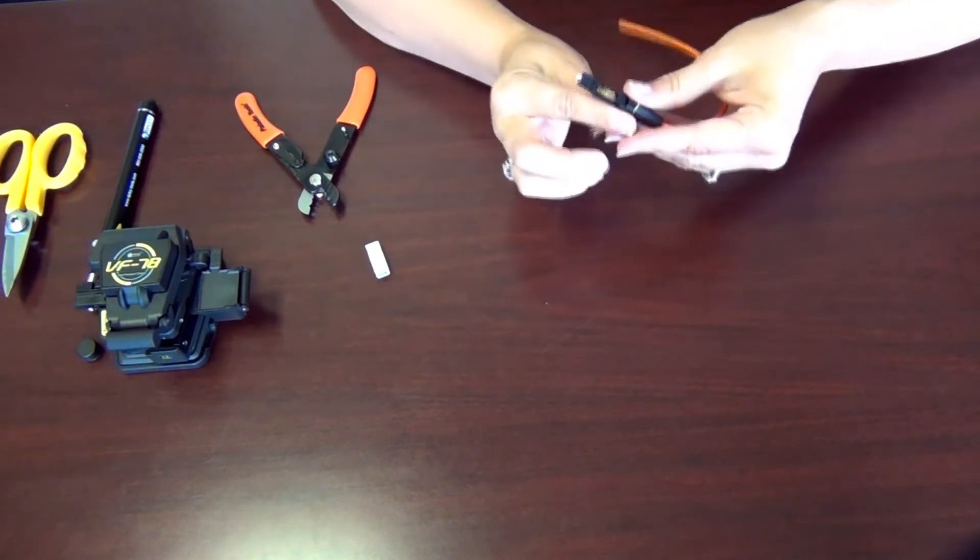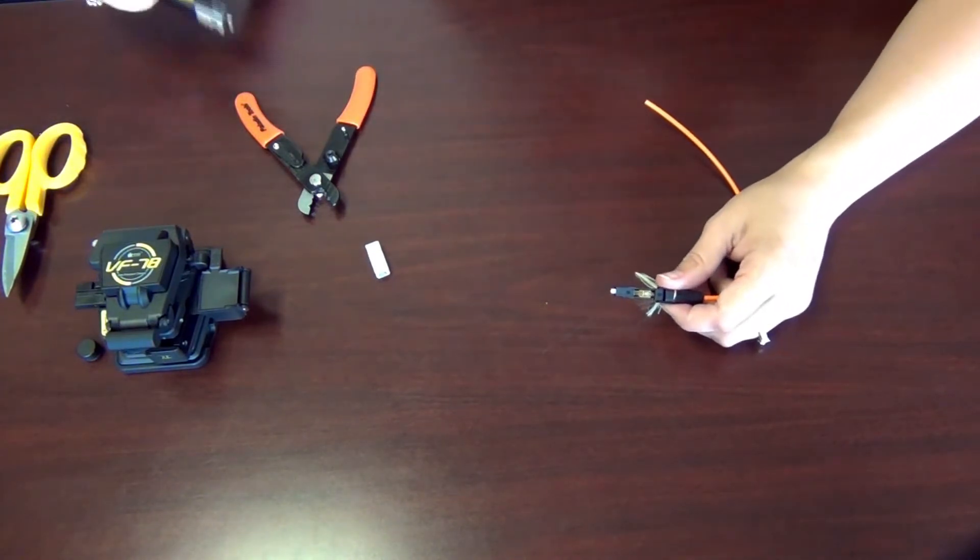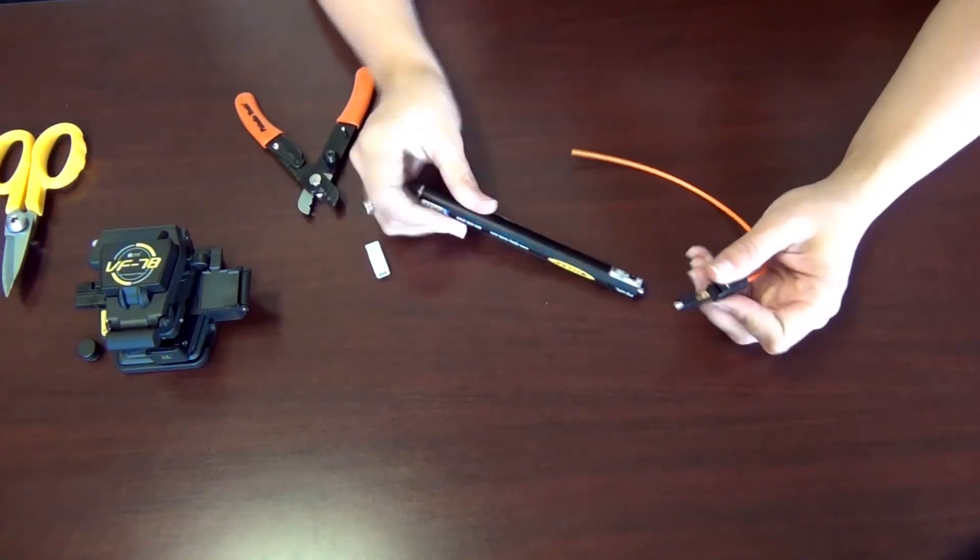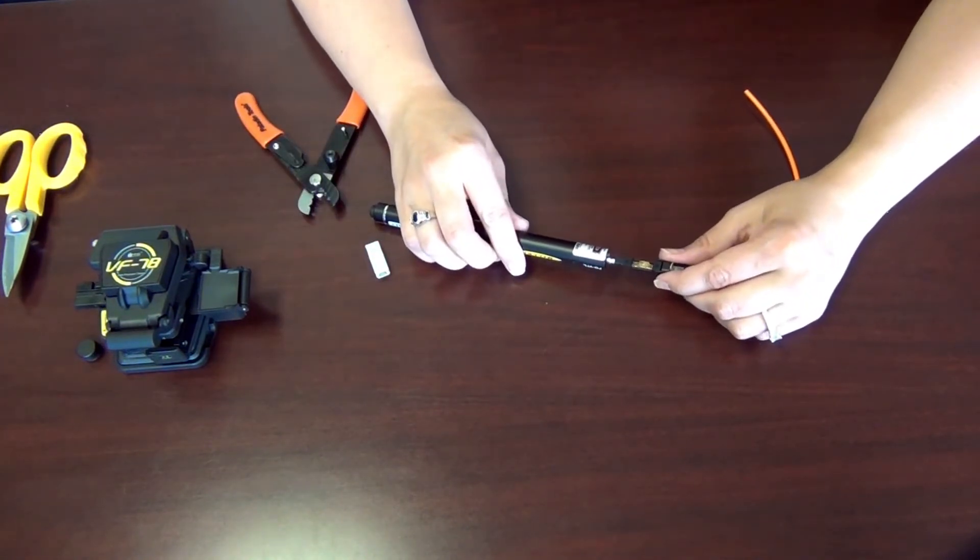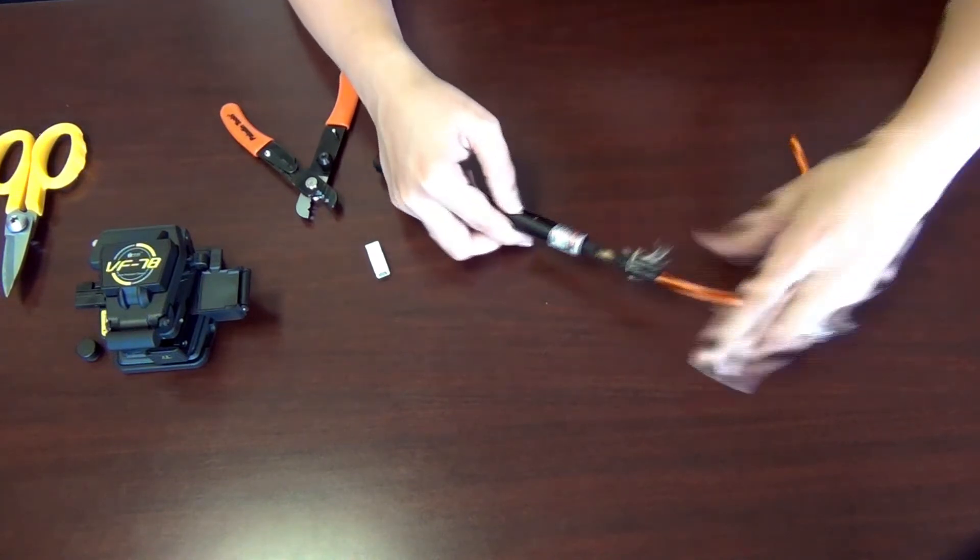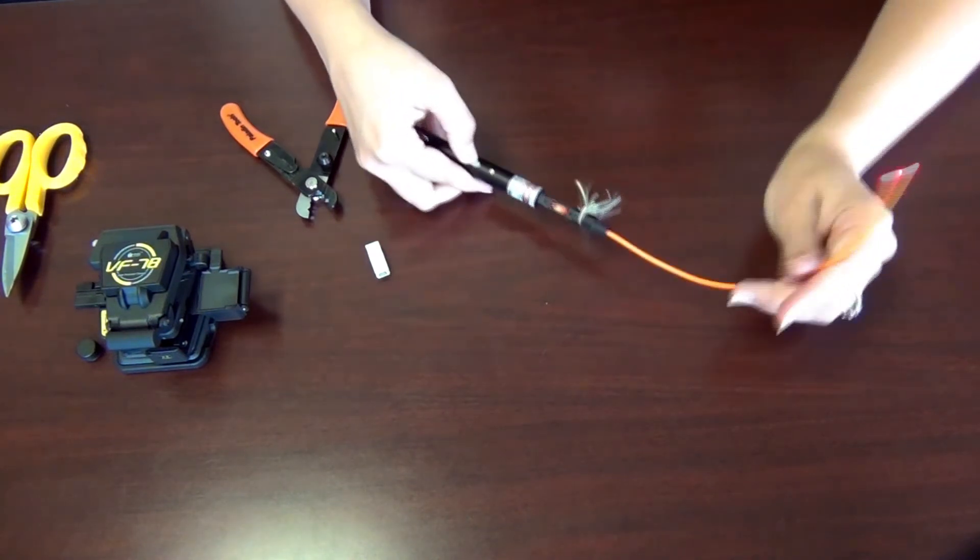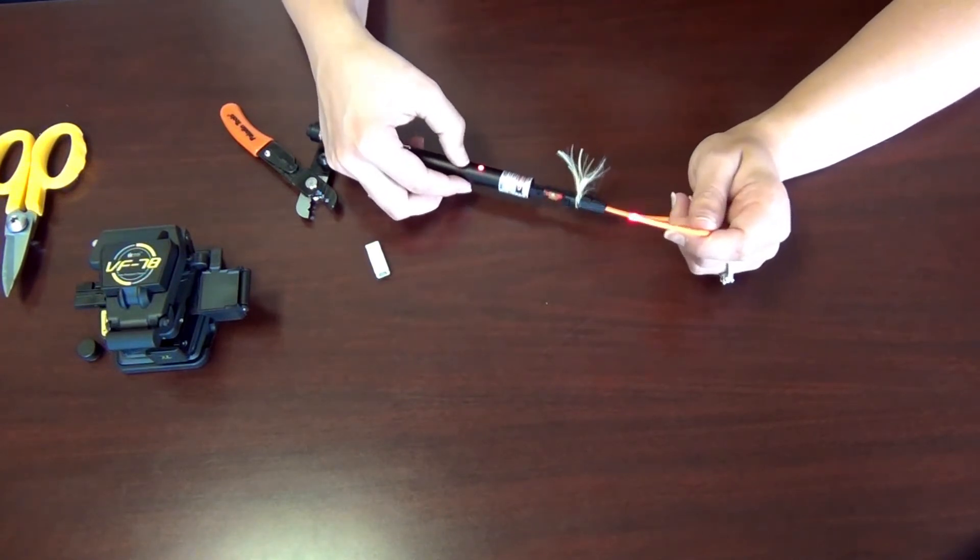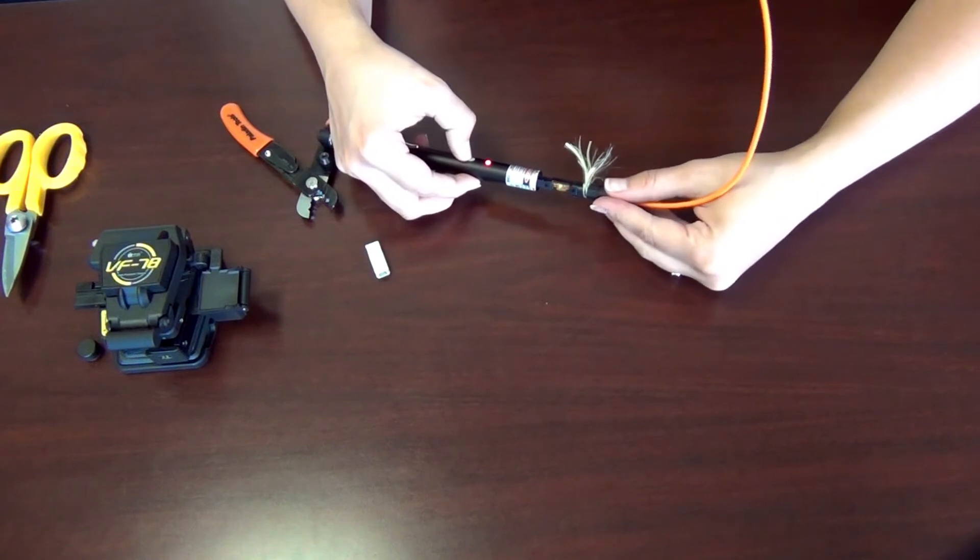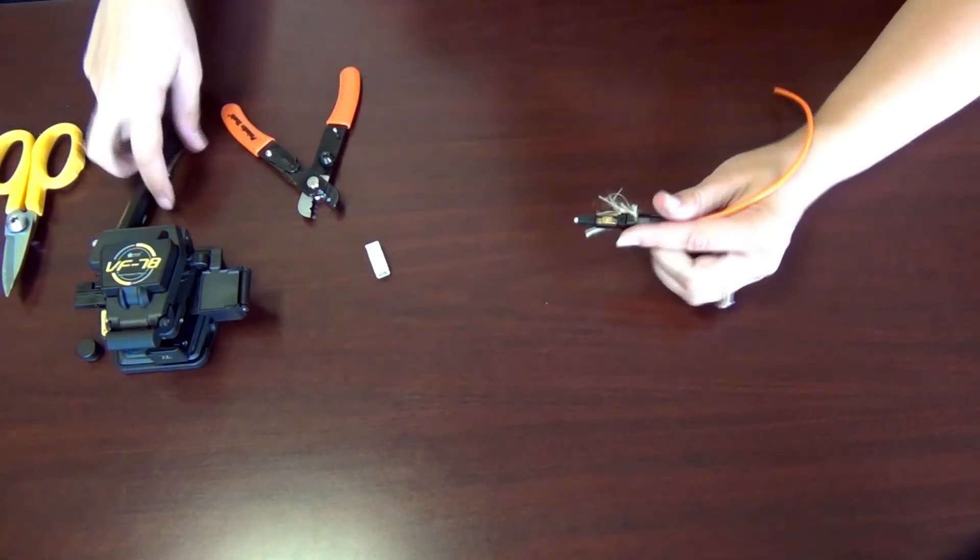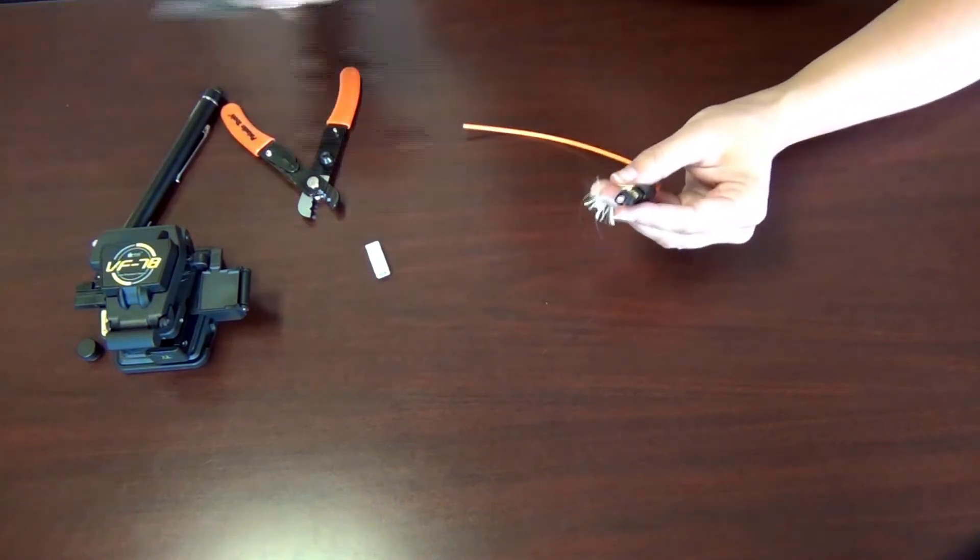Now before we finish this off we want to make sure that we test it so that it's working. Here's our tester. Turn the tester on, get the tester end onto the connector snugly. Push and press the button, and if it lights up on the other end like that, that means we've terminated it properly. Go ahead and turn that off, and then just cut these Kevlar ends so they stay out of your way.